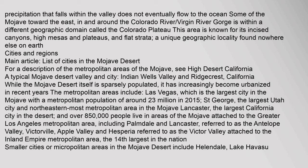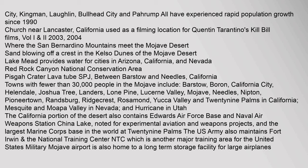These areas include Palmdale and Lancaster, referred to as the Antelope Valley; Victorville, Apple Valley, and Hesperia, referred to as the Victor Valley, attached to the Inland Empire metropolitan area, the 14th largest in the nation. Smaller cities or micropolitan areas in the Mojave Desert include Helendale, Lake Havasu City, Kingman, Laughlin, Bullhead City, and Pahrump — all of which have experienced rapid population growth since 1990.